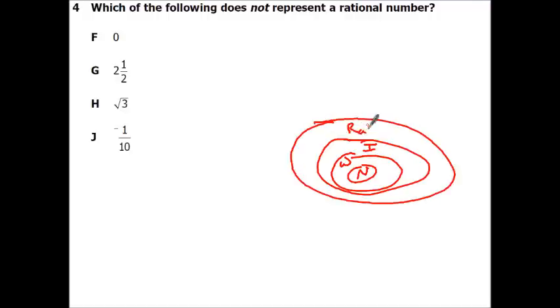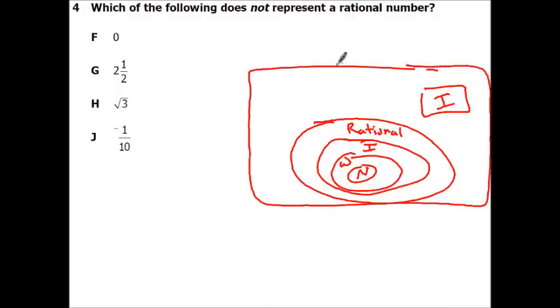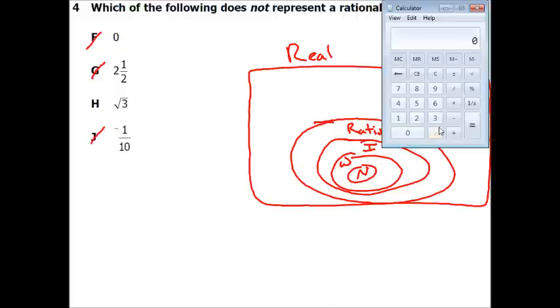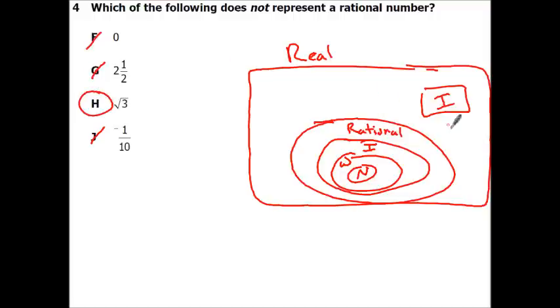Then you have irrationals, and then everything is a real number. So basically all we're looking for is something that's an irrational number in this. So F says zero, and that's a whole number, so that's rational. Two and a half, those are rationals because it has a terminating decimal. Negative one-tenth is a terminating decimal. And if you were to do the square root of 3, that goes on forever and does not repeat. So that is an irrational number.